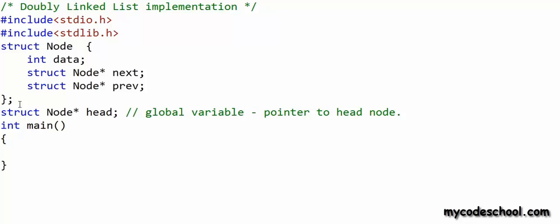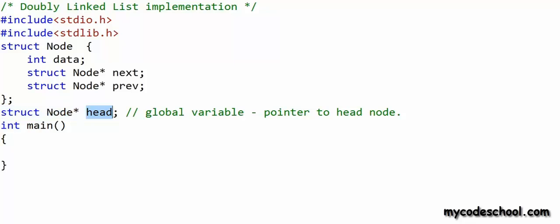In my C program, I have defined node as a structure with three fields. The first field is of type integer to store data. The second field is a pointer to node to store the reference of the next node, and the third field is a pointer to node to store the reference of the previous node. I have defined a variable named 'head', which is a pointer to node, in global scope.